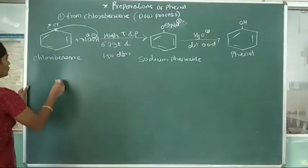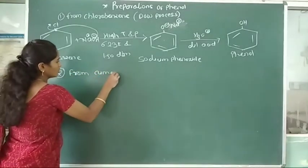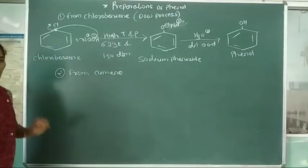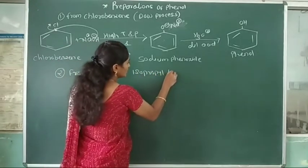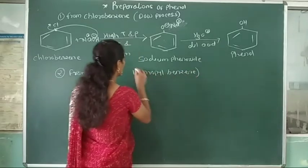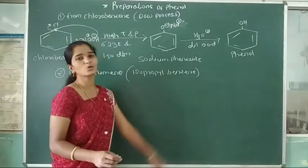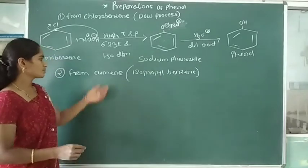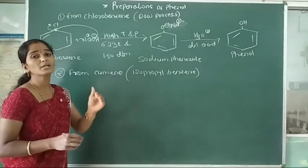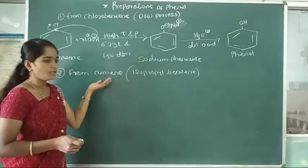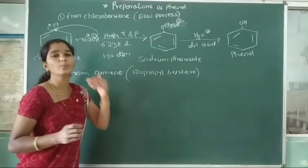The second method: phenol is prepared from cumene. Another name for cumene is isopropylbenzene — an isopropyl group attached to a benzene ring. In this method, cumene undergoes air oxidation in the presence of cobalt and naphthalene as catalyst to form cumene hydroperoxide.